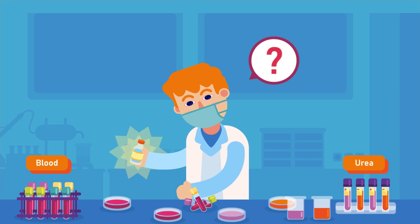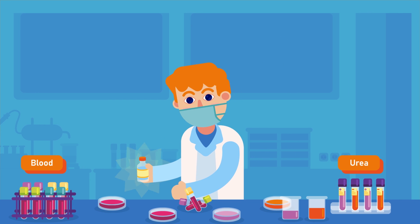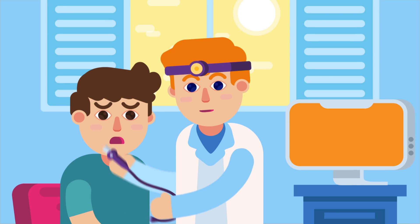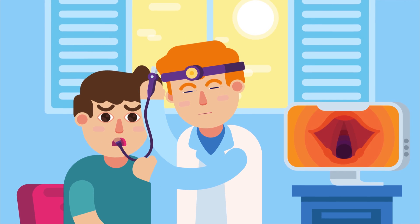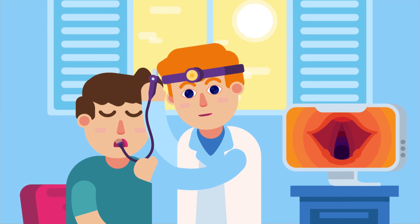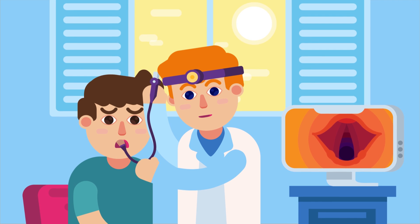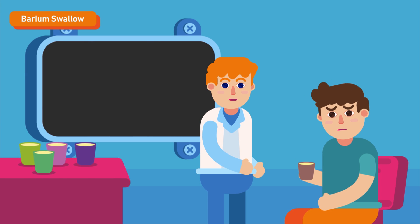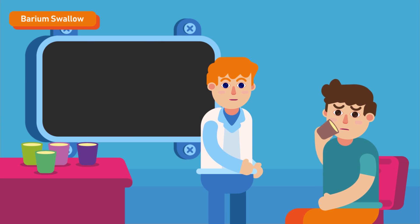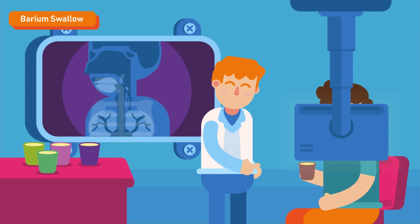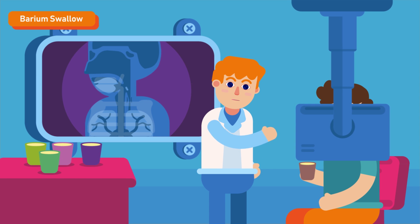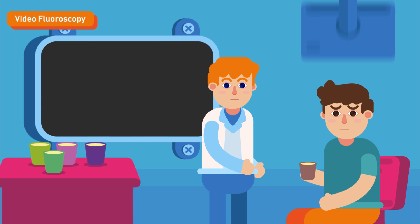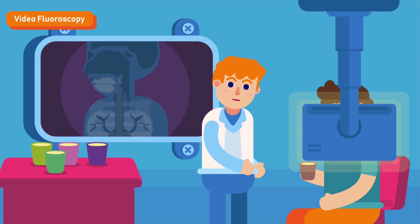Electrolyte disturbance due to dehydration can be detected on blood tests. Investigations specific for dysphagia include fiber optic direct laryngoscopy, which can view the laryngeal inlet and is useful for investigating oropharyngeal dysphagia. Barium swallow, in which the patient is given a radio-opaque contrast to drink, and the contrast is X-rayed as it passes through the pharynx and esophagus. Videofluoroscopy is similar to barium swallow but instead of still images, a video clip is made of the contrast passage into the stomach.